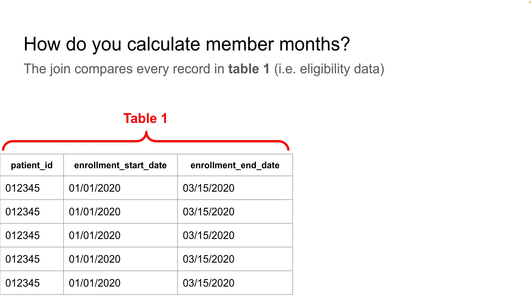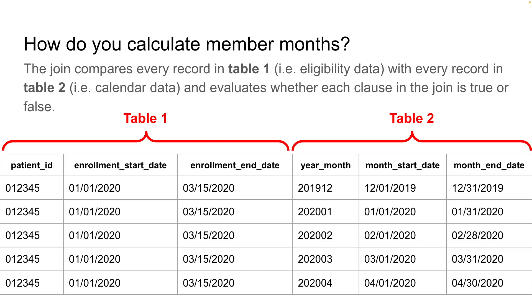So let's see how the join is actually working using some example data. What the join is doing is it compares every record in table one, the eligibility data, to every record in table two, the calendar data, and it evaluates whether each clause in the join is true or false. In the eligibility data, we have our eligibility spans for patient ID 012345, duplicated five times here. This isn't what the eligibility data actually looks like, but behind the scenes, this is what the join is doing under the hood — comparing this record across all of the records in the calendar table.